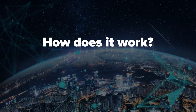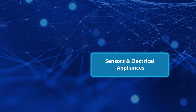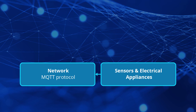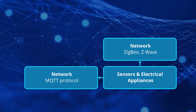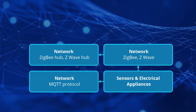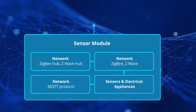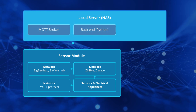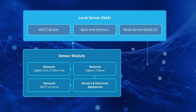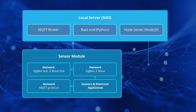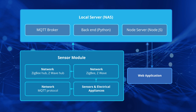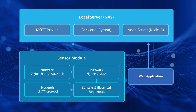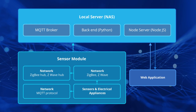How does it work? Measurements of different sensors and electric appliances are periodically sent through network protocols to the local server. When the office administrator accesses the system with a web application, he can see all data stored in the server. From the web UI, he can interact with devices like AC, TV, lights, etc.